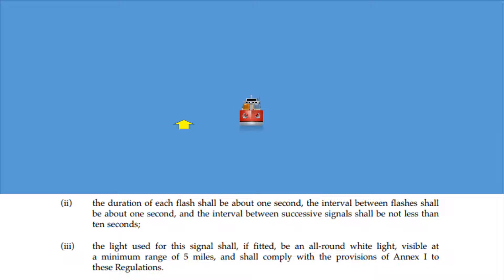The duration of each flash shall be about one second, the interval between flashes shall be about one second, and the interval between successive signals shall not be less than ten seconds. The light used for this signal shall, if fitted, be an all-round white light, visible at a minimum range of five miles, and shall comply with the provisions of Annex 1 to these regulations. Annex 1 being the technical details of lights and shapes.